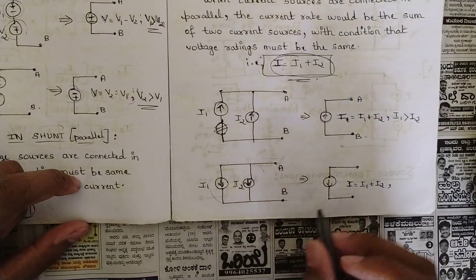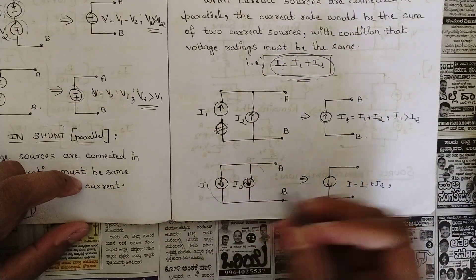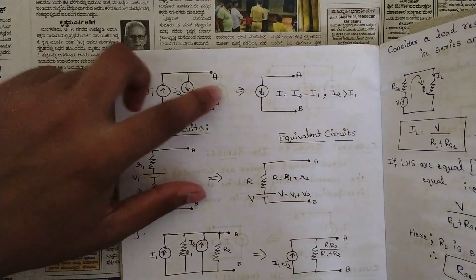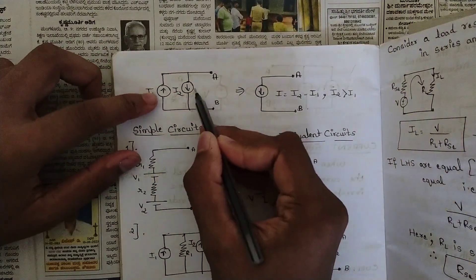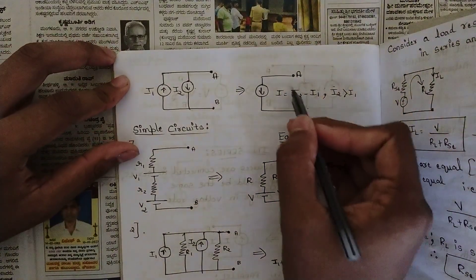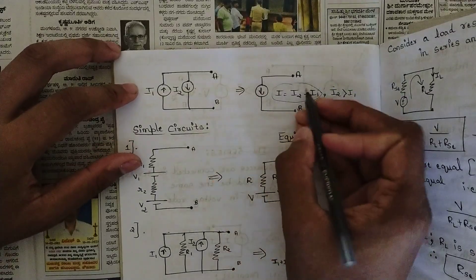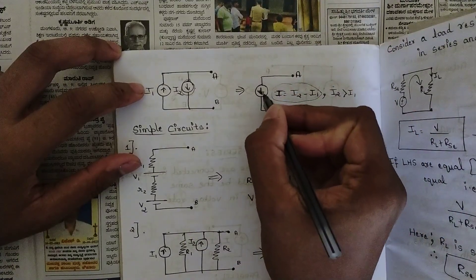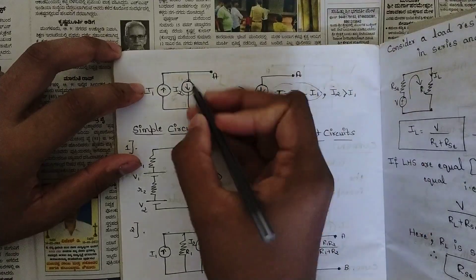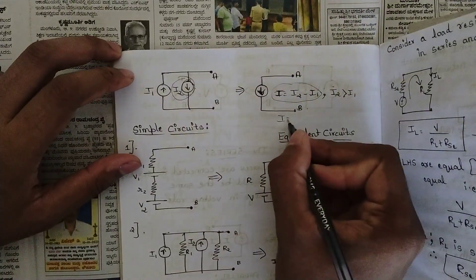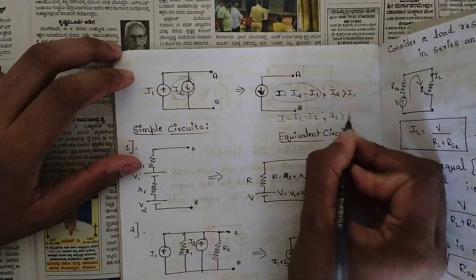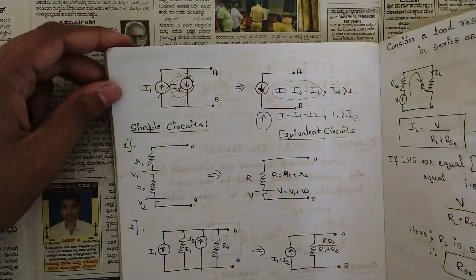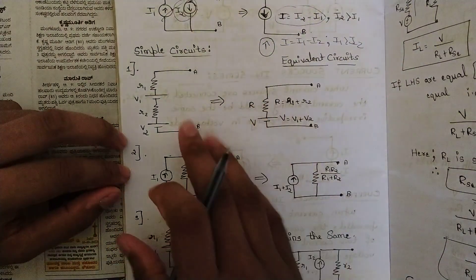When both current sources point in the downward direction, they again have the same direction, so the current is added up in that downward direction. When two current sources in parallel have different directions — one upward and one downward — the currents are subtracted, just as we did for voltage sources in series. So I = I2 − I1 when I2 > I1, and I = I1 − I2 when I1 > I2, with the resultant direction following the larger source.